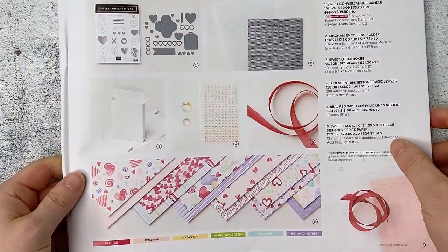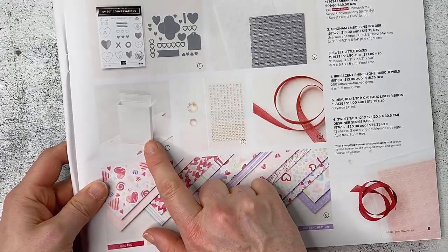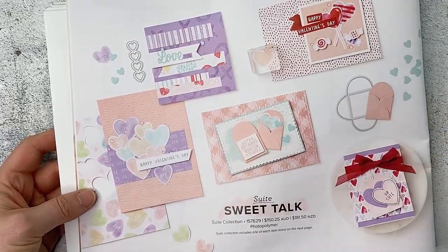So we are using the sweet little treat boxes on page 9 of the mini catalog. Those are in the sweet talk bundle but of course you can use them with any images and papers that you like.